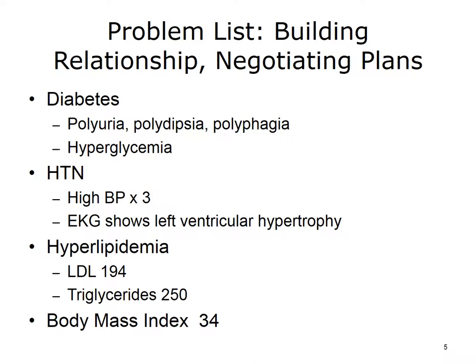To begin this discussion, consider a patient who has come to see a clinician to establish care. In the course of the visit, a problem list has been generated that includes diabetes, causing frequent urination, excessive thirst, increased appetite, and high blood sugar. The list also includes high blood pressure based on three previously recorded abnormal blood pressures, and evidence on an electrocardiogram that the heart is being affected. Furthermore, LDL levels are far above the goal at 194, and the triglyceride level is high at 250.